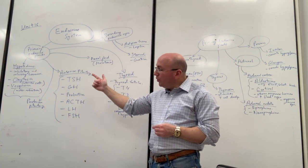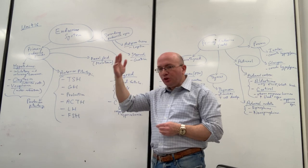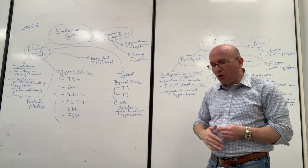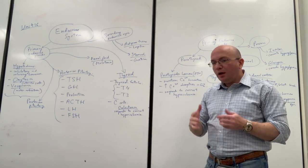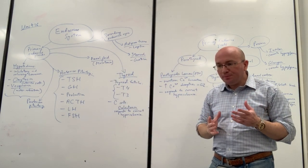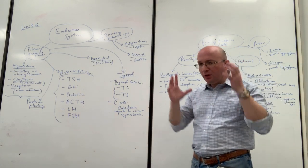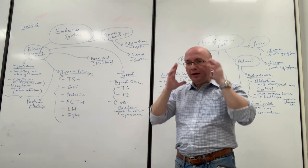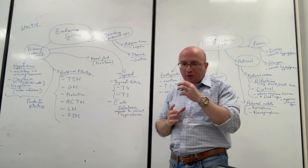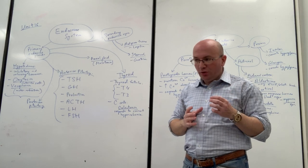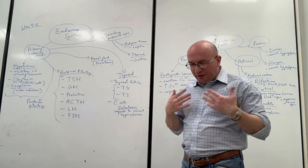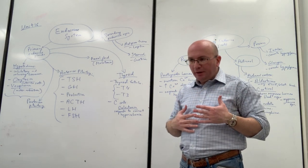We'll go through each of them using a top-down approach. Multiple important endocrine areas are located in the brain or directly connected to the brain, while others are dispersed throughout the body.